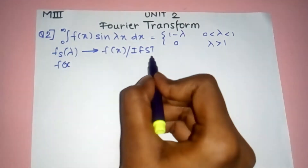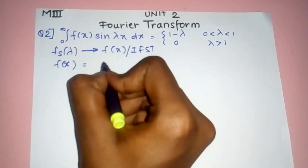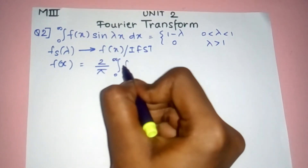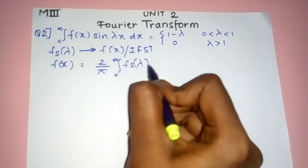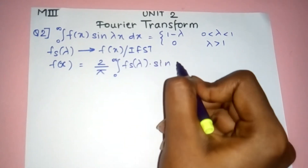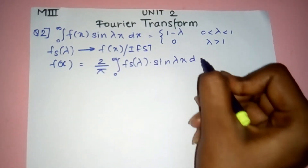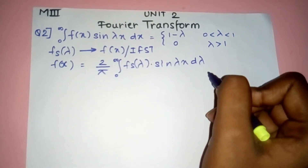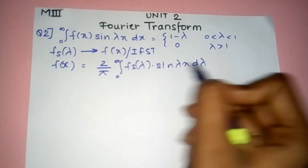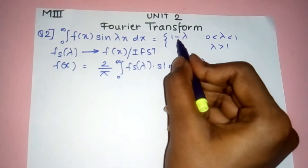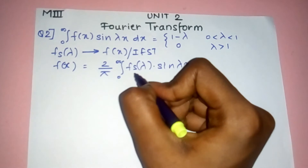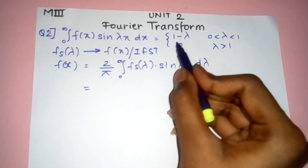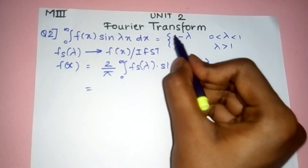The formula for the inverse Fourier sine transform is F(x) = (2/π) ∫₀^∞ F_s(λ) · sin(λx) dλ. This is the formula for finding F(x). Now in place of F_s(λ) we have to put these piecewise values — there are two values, the first one and the second one.